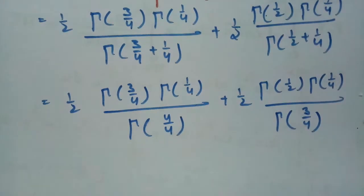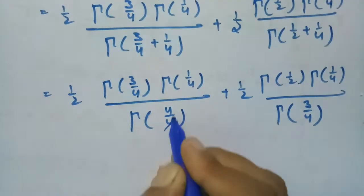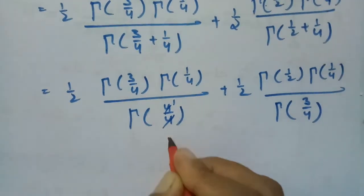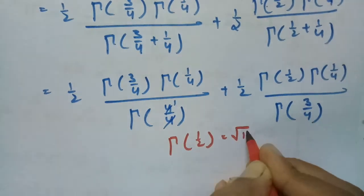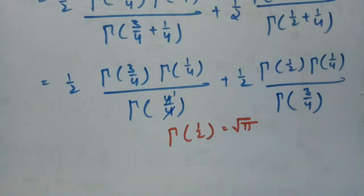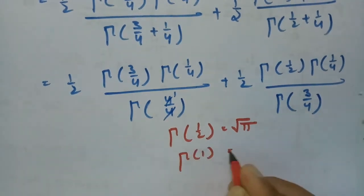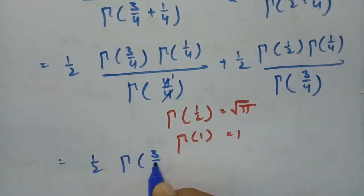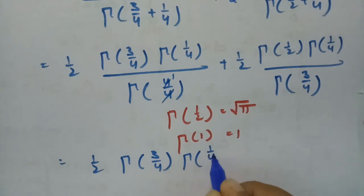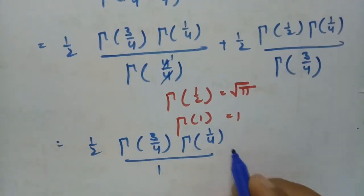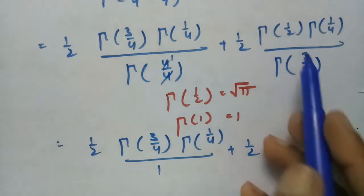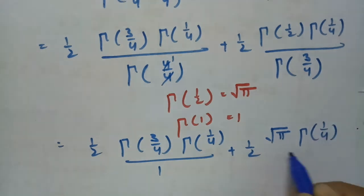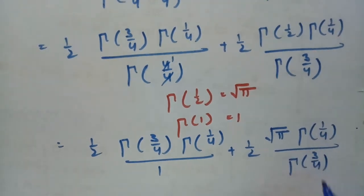Since Γ(1/2) = √π and Γ(1) = 1, substituting these values, the first term simplifies to half times Γ(3/4)·Γ(1/4), because Γ(1) = 1 cancels. The second term becomes half times √π · Γ(1/4) / Γ(3/4). So the total expression is half·Γ(1/4)·Γ(3/4) plus half·√π·Γ(1/4)/Γ(3/4).